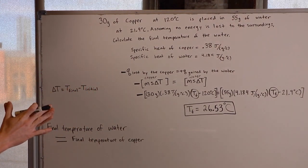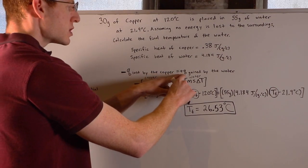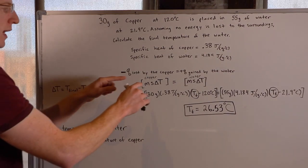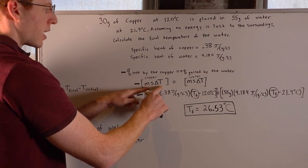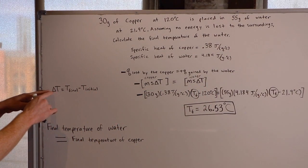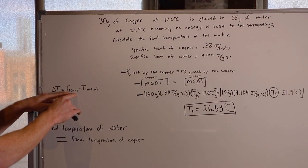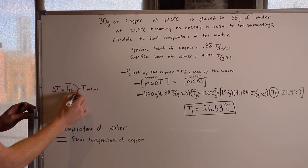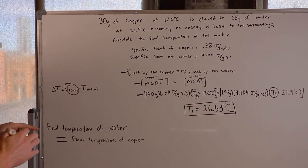The key to solving this problem: the heat lost by the copper, negative Q, equals the heat gained by the water, positive Q. Since Q equals m·s·delta T, we have negative m·s·delta T for copper equals m·s·delta T for water. Delta T is T final minus T initial. Importantly, this final temperature is the same for both substances — both the copper and the water reach the same final temperature.